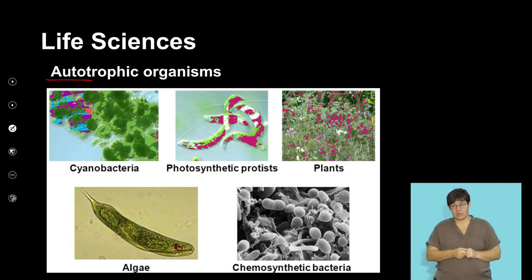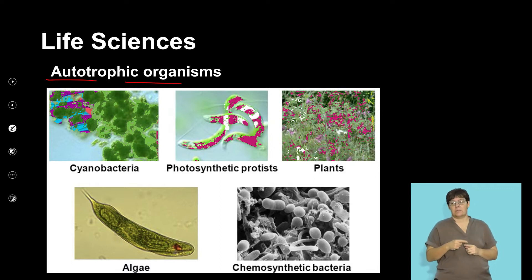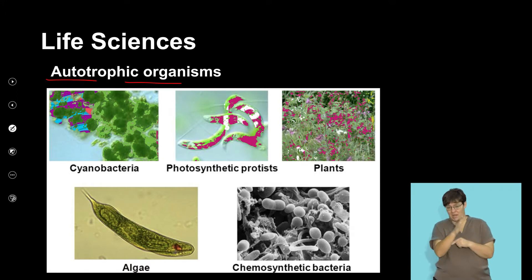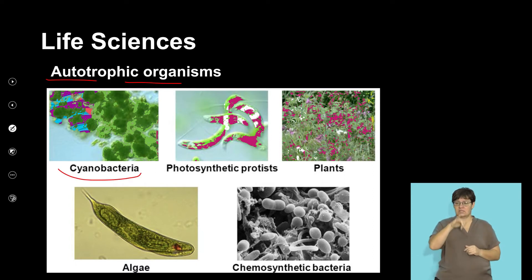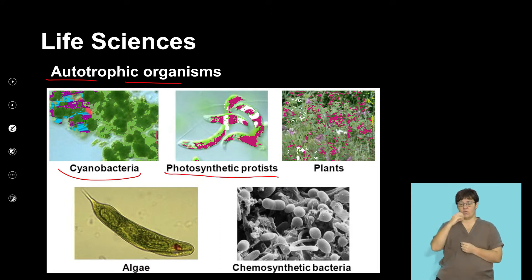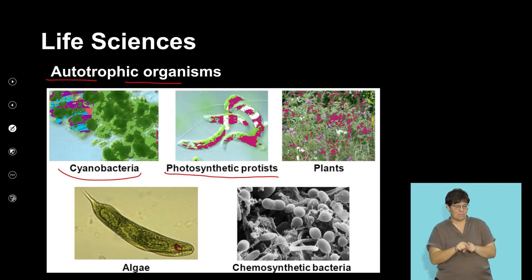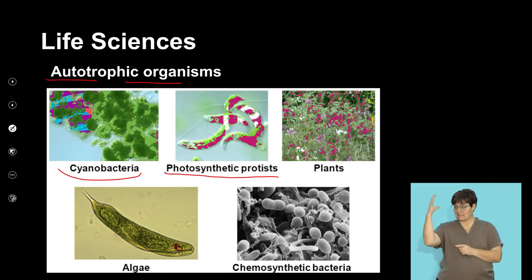It's important that we recognize there are several different types of autotrophic organisms. We often associate autotrophs with just plants, but there are more than just plants that produce their own food. The ability to produce your own food is a characteristic of being an autotroph. There are cyanobacteria that have the ability to produce food because they have chloroplasts in them. We know there are certain photosynthetic protists, such as algae, that are able to produce energy by using radiant energy from the sun.